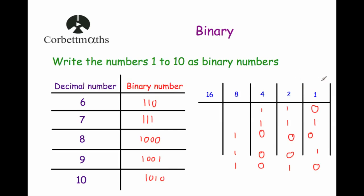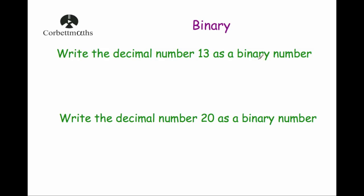As long as you know that in binary you start with 1 and then times by 2 to get each column — 1, 2, 4, 8, 16, and so on — then to write a number in binary you just go through and see which digits you need to make that number. For example, the number 10 needed an 8 and a 2, so you put 1, 0, 1, 0. In an exam, start off by writing the column headings.